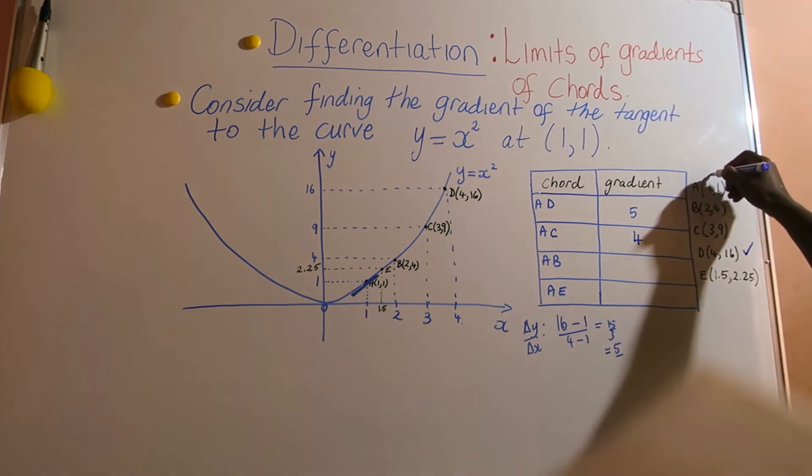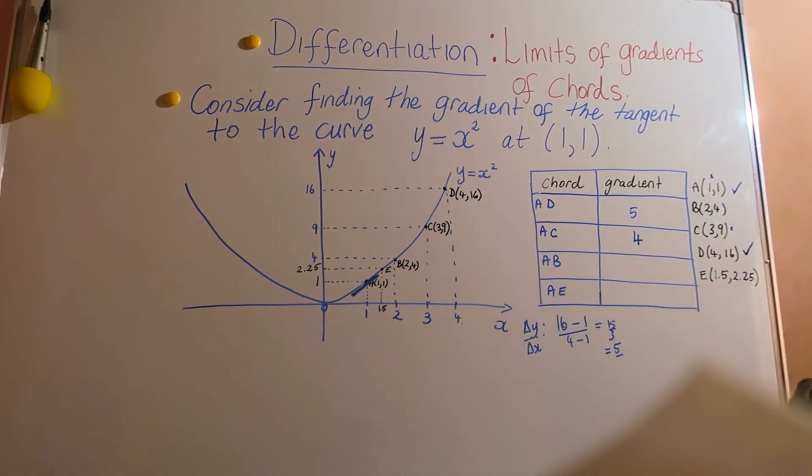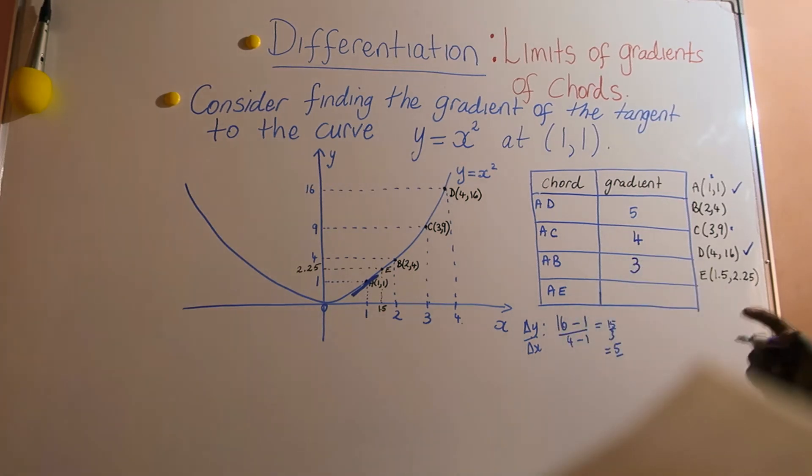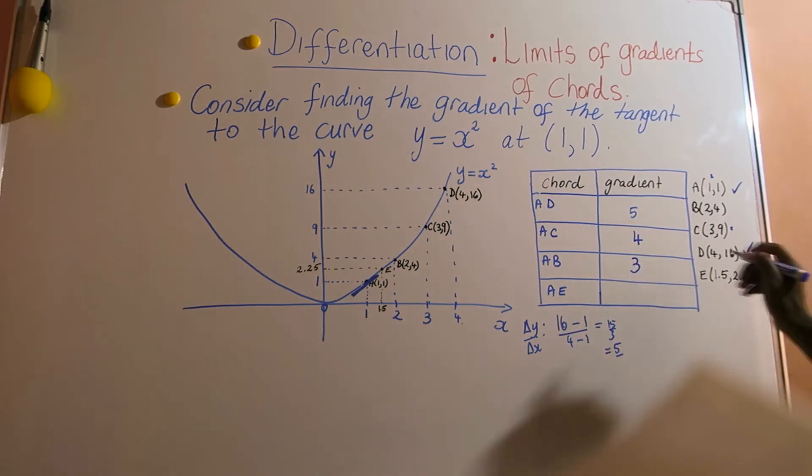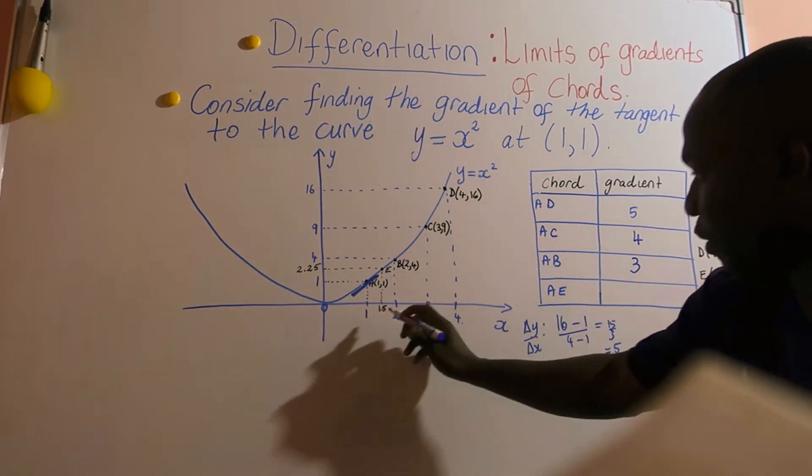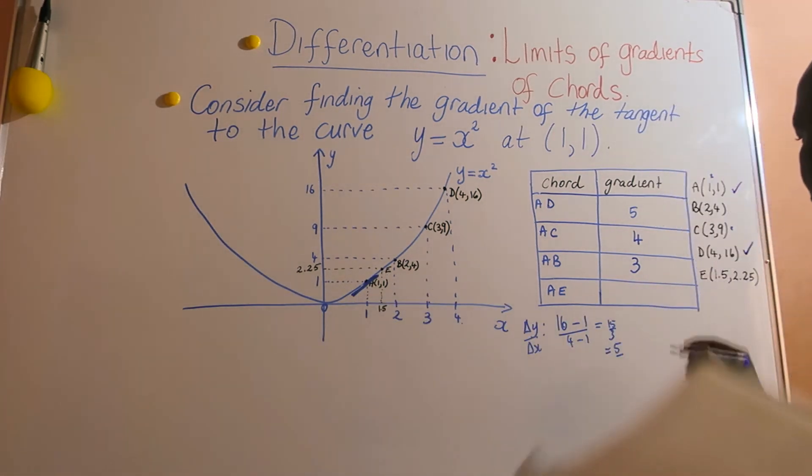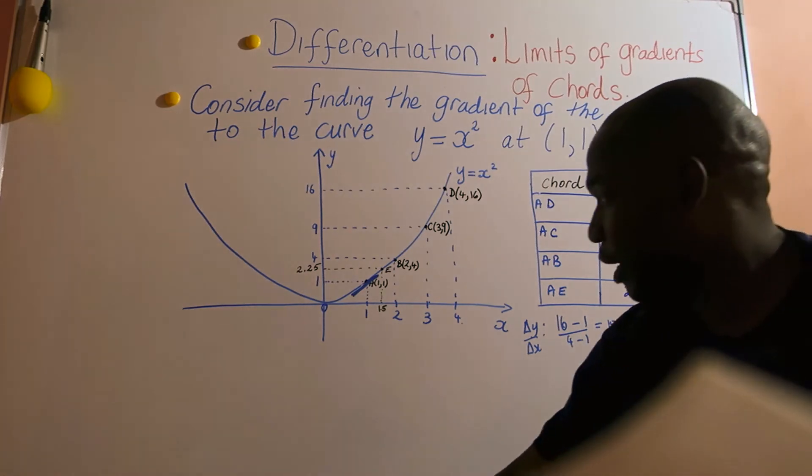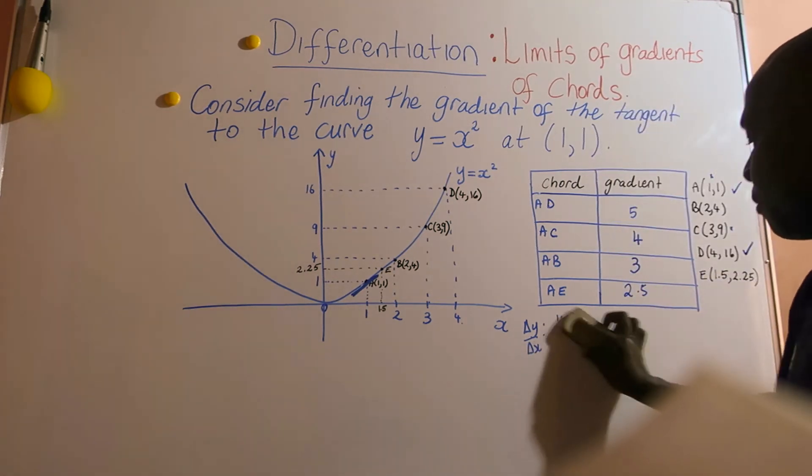So this is equal to 5. If you do the same for AC, your gradient would be 4. You are using the A and the C here. If you use AB, you see that your gradient is 3. If you use AE, which is the one closer, which we have taken this point here, so AE will give 2.5.